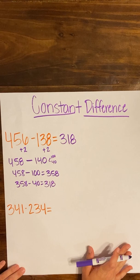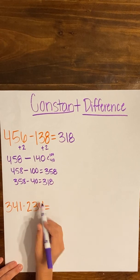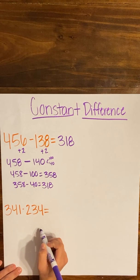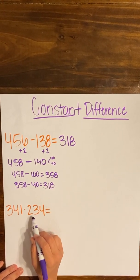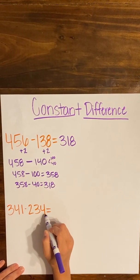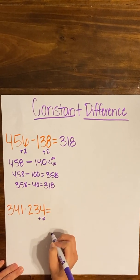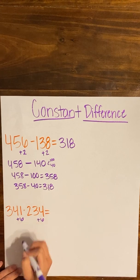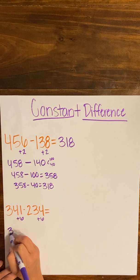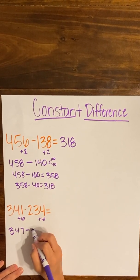Let's look at another example. I have 341 minus 234. Again, I don't want to regroup — I've got a one here and I don't have enough ones to take away the four I'd need to. So to get a friendlier number, I'm going to try to get up to 240. I need six more to get 234 up to 240, and we keep it constant, so we do the same to both numbers. 341 plus 6 gives 347, still subtracting, 234 plus 6 is 240.